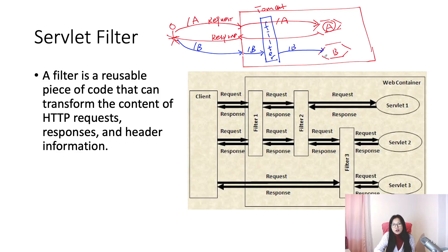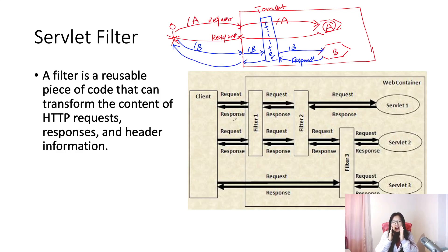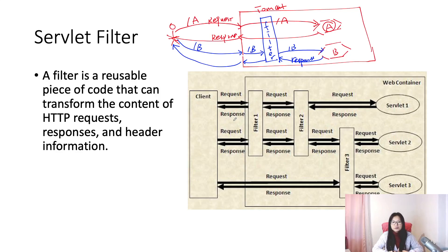And also, for servlet B, when there is a response, the response will also go to the filter first. In the filter, you can alter or change the response to be something else, or you can add something into the response. Then it will go back to Tomcat, then back to the user. So the filter acts as a man standing in the middle: before the request goes to the servlet it goes to the filter, and before the response goes back to the browser it goes to the filter first. This is how the filter works.